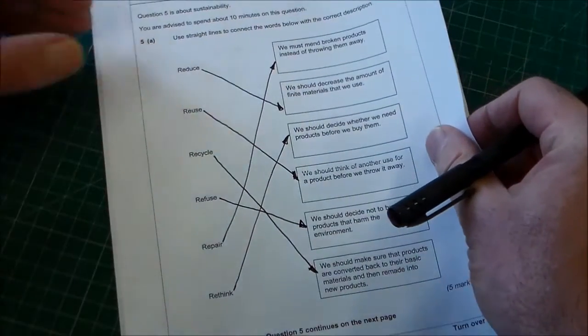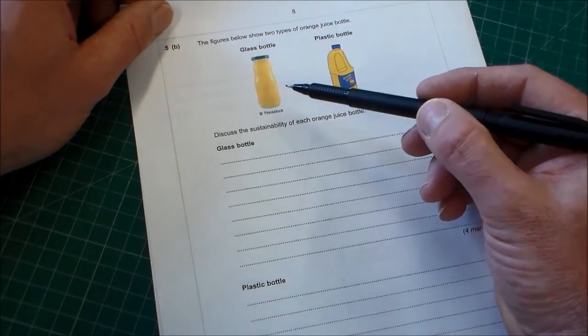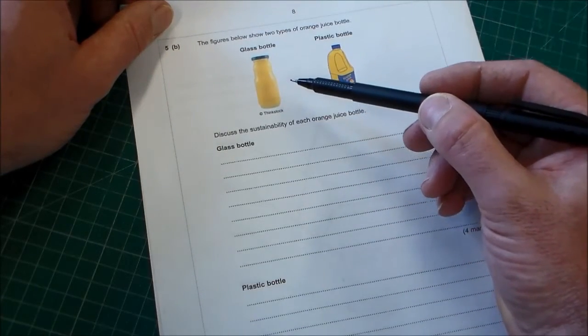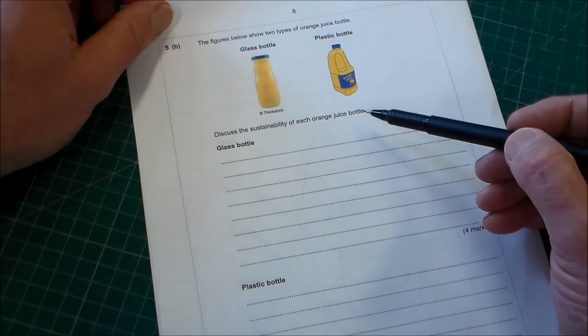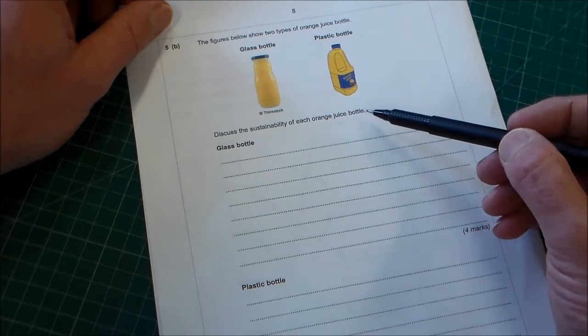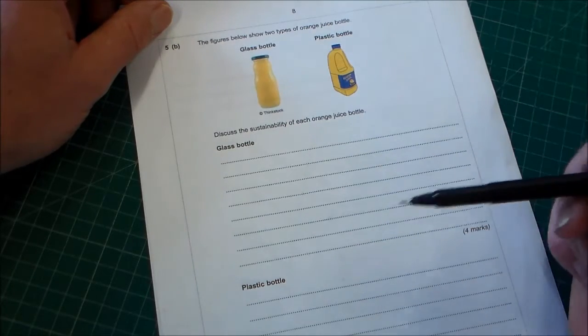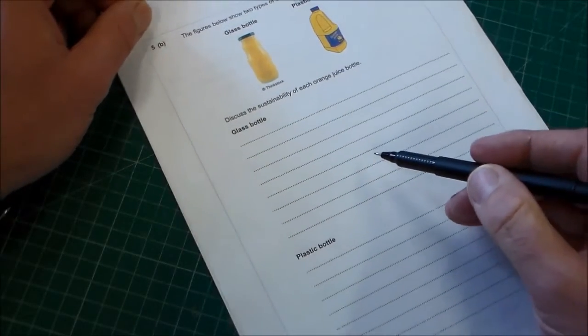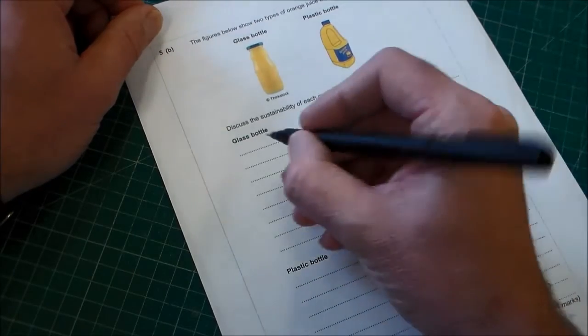We're going to turn over the page for the second part of this question five. And this is about looking at two different types of orange juice bottle. The figures below show two types of orange juice bottle, a glass bottle and a plastic bottle. Discuss the sustainability of each orange juice bottle. You'll notice here it doesn't have the quality of written response. So you can answer this in bullet points if you want and still get the same mark. I'm going to answer this in bullet points.